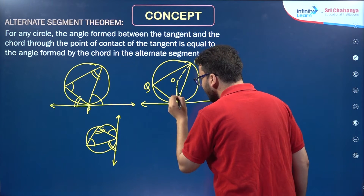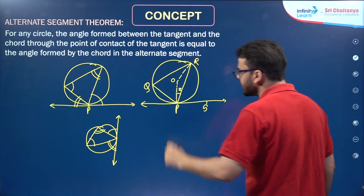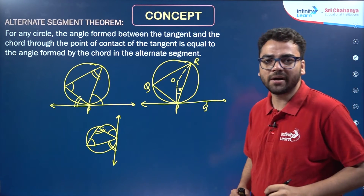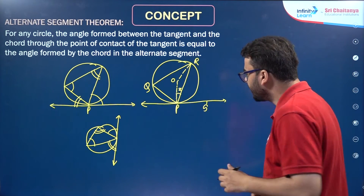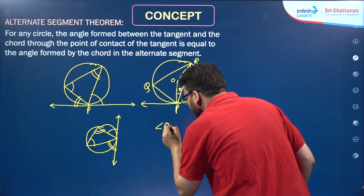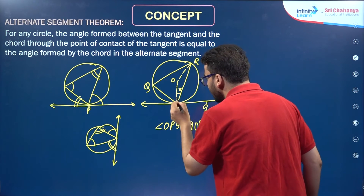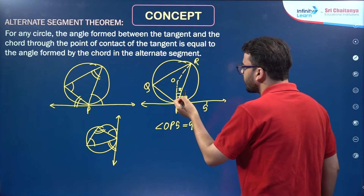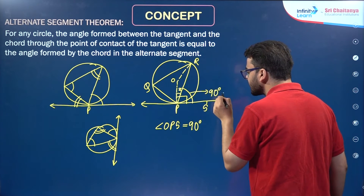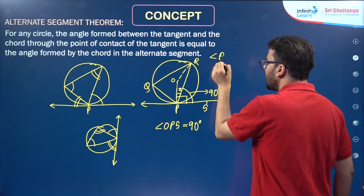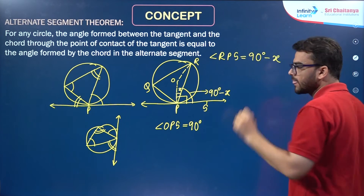Suppose this angle is X, and suppose this point is S. Now, you have studied the property that a tangent to a circle is perpendicular to the radius through the point of contact. So angle OPS here is equal to 90 degrees. This angle is 90 degrees. So from here, angle RPS is equal to 90 minus X.